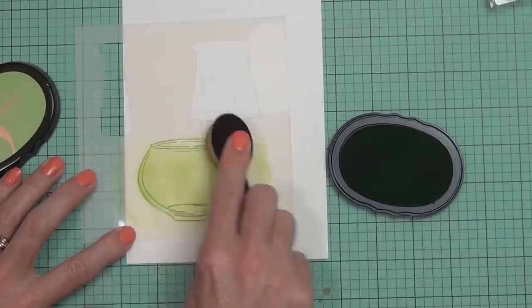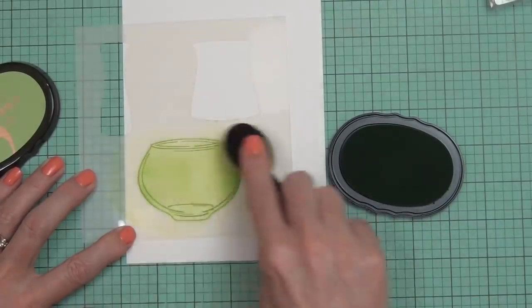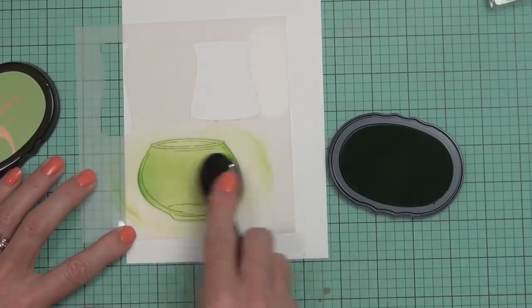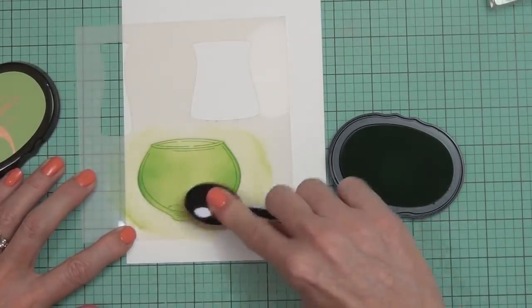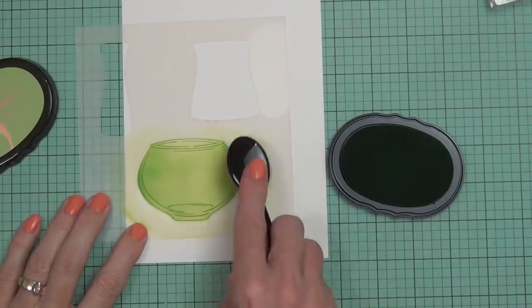Basically what I'm doing here is using the mask as a normal mask. I've stamped my image out and coloring it with the same color ink—this is the new lime ink from Altenew. This is almost like no-line stamping here.